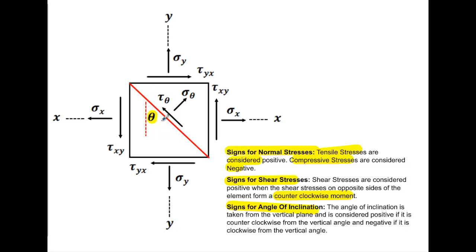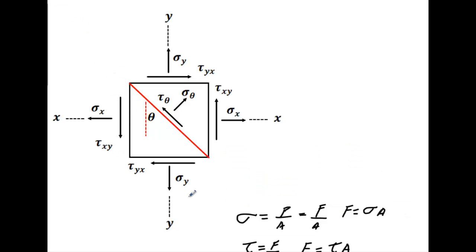I recommend noting the sign conventions used here. For normal stresses, tensile stresses are considered positive and compressive stresses are negative. For shear stresses, a shear stress is considered positive when the shear stress on the opposite side of the element forms a counterclockwise moment. For the angle of inclination, angles are measured off the vertical — counterclockwise is positive.